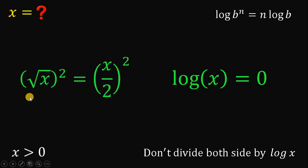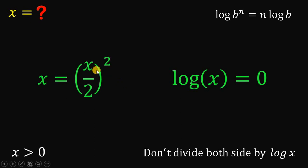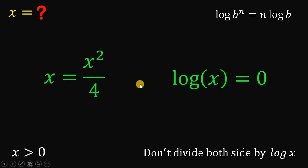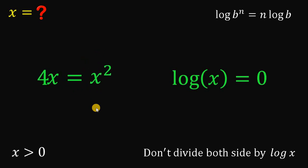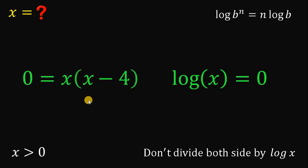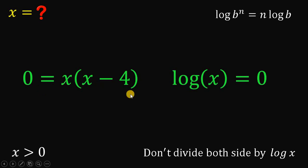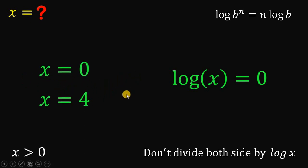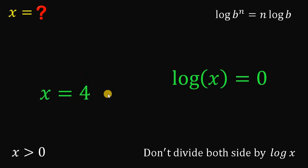The left-hand side becomes x, and the right-hand side becomes x squared over 4. Multiply both sides by 4, then equate to 0: we get 0 equals x squared minus 4x. Factoring out x gives us x times x minus 4 equals 0. Since this equals 0, at least one factor must be 0, so x equals 0 or x equals 4. Since we said x is greater than 0, we discard x equals 0. From the first equation, x equals 4.